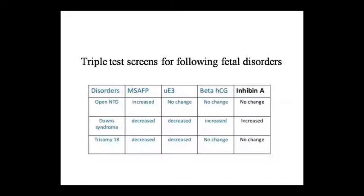Pre-implantation diagnosis is mostly done for conceptuses created through IVF. Fertilized oocytes are developed to the 8-cell blastocyst stage, then a single blastomere is removed. DNA is extracted and amplified using PCR to make multiple copies, and genetic analysis is performed. If the conceptus is free of any genetic error, it can then be implanted in the mother. Recombinant DNA technology is also very helpful in prenatal diagnosis, and a variety of DNA probes are available today for diagnosing disorders including hemoglobinopathies.